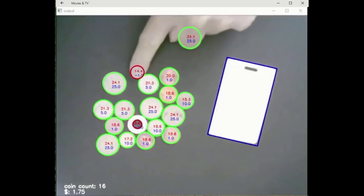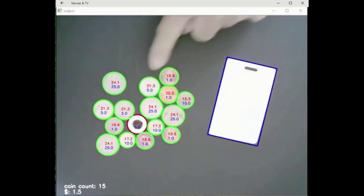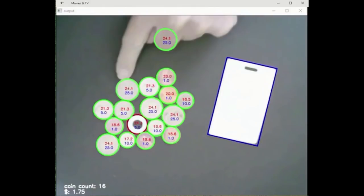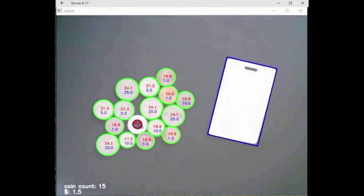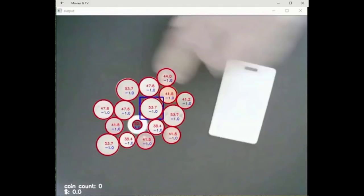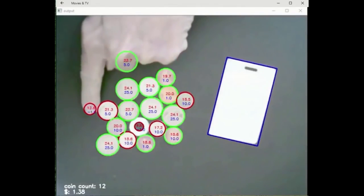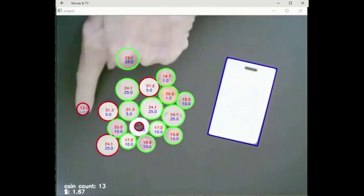A reference for coin size is a security badge, which is a standard ISO ID-1 size of 85.6 by 53.9 millimeters. This is used to calculate the millimeters per pixel in each frame. A complication of the small dimensions and low webcam resolution is the camera distortion creates a measurement error depending on where the coin is in the field of view.